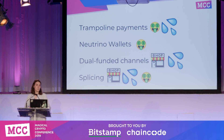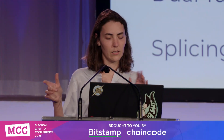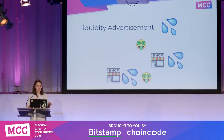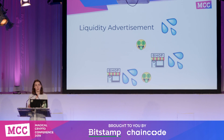There's also splicing, which is basically taking loop-in and loop-out — what Lightning Labs' Lightning Loop project does — and moving it more into the spec so that anyone can move funds on and off chain within a channel without having to close and reopen it. And the last thing is a liquidity advertisement feature so that nodes with liquidity can advertise it over the network, making it easier for people to find the liquidity they need without filling out a form.